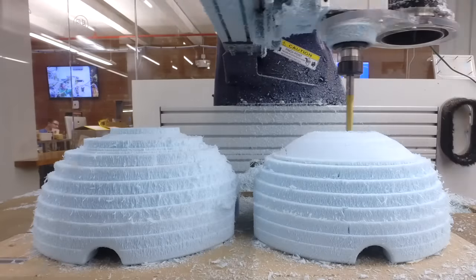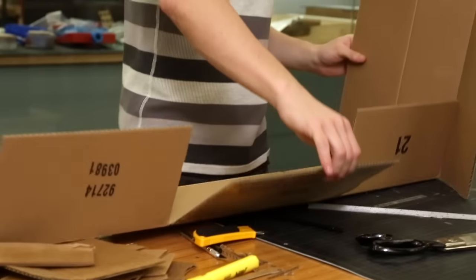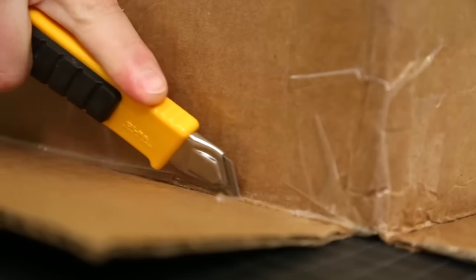We have 3D printers and CNC machines but whenever we first start to prototype our ideas we typically use materials as simple as cardboard or paper and things you'd have at home. It's cheap and easy to be able to get a sense of size and scale and form and it's just a very approachable material.